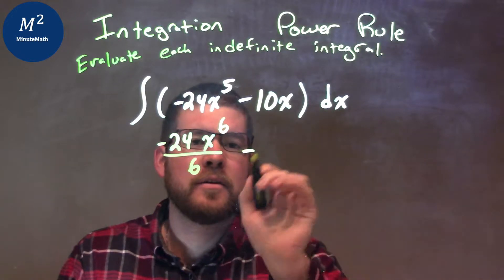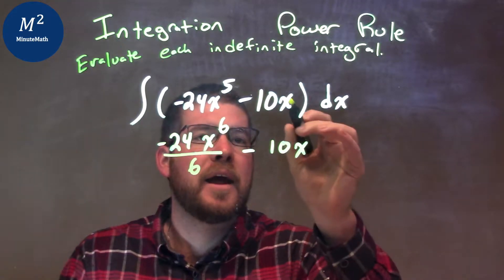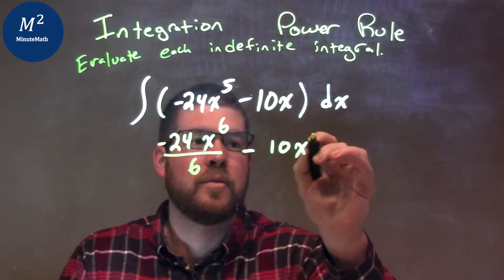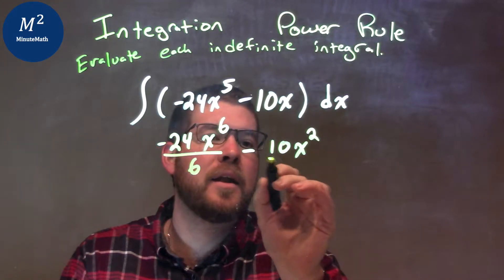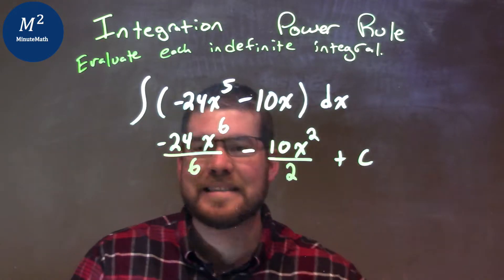We have subtraction out here, so minus we have the 10x, but then I have to raise that exponent by 1. It's the first power, so I raise the 1 to the second power, and then I divide this second part here by 2, and I can't forget my plus C.